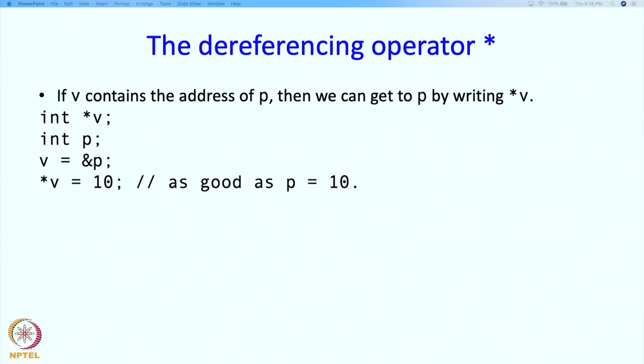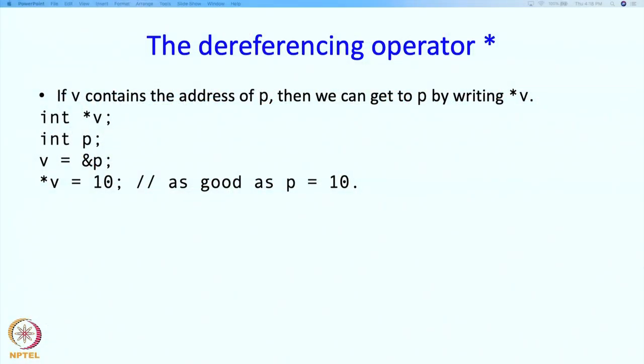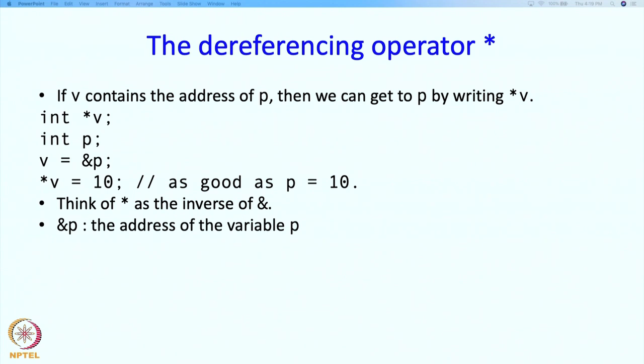These stars and ampersands are really very simple and straightforward, but they are inverses of each other. & says 'give me the address of this variable', and * says 'give me the variable whose address is in this variable'. So &p is the address of variable p, and *v is the variable whose address is in v.